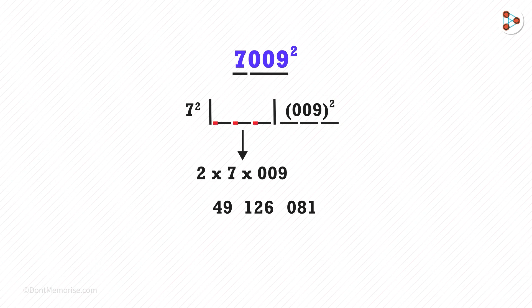Always remember, we will have to write 3 digits in the middle and on the right hand side. Hence, we have to write 081 and not 81. So, on solving this further, we get the answer of 7009 squared.